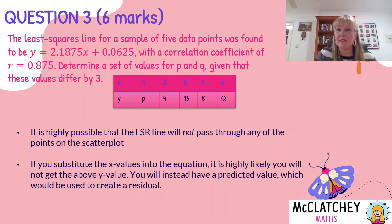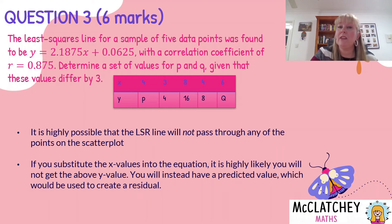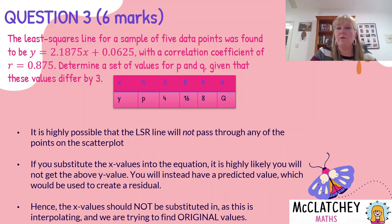What you get when you substitute in is a predicted value — you know this from doing residual plots. These are the actual values of what was measured. When you substitute the actual x value and get a prediction using the equation of the least squares regression line, that's when you get a residual. A lot of students assumed these points were residuals and worked in the wrong direction, instead of understanding this is the original data we're trying to find. We're not doing interpolation here — we're trying to get back to the original data.